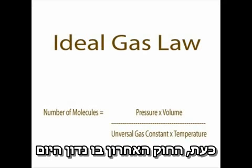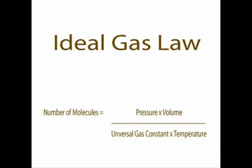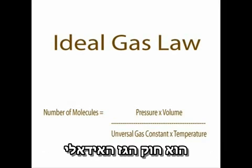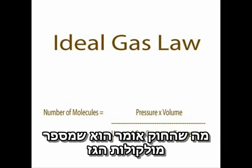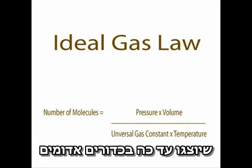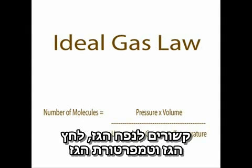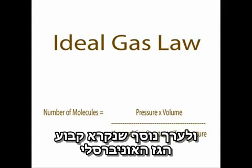Now the final law that we will talk to you about today is the Ideal Gas Law. What this law says is that the number of gas molecules, which we have up until now been representing as little red balls, is related to the volume of the gas, the pressure of the gas, the temperature of the gas, as well as another value called the universal gas constant.